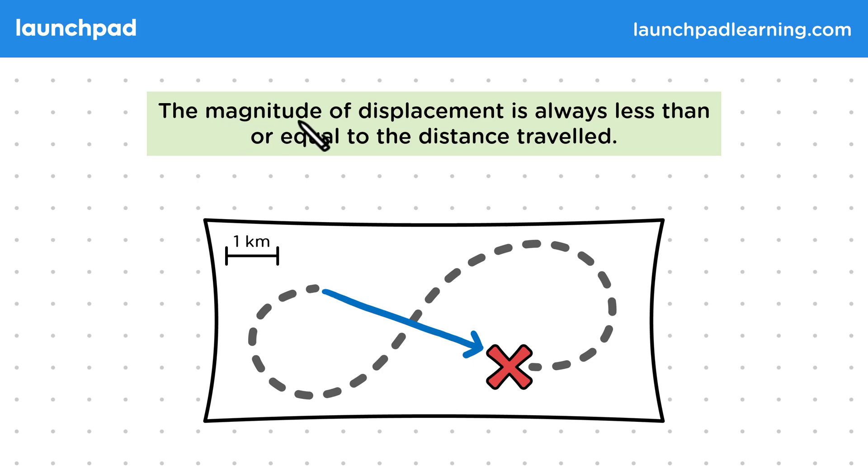Well the magnitude of displacement is always less than or equal to the distance travelled. And this is because the distance describes the full journey, whereas the displacement only describes the start and the end points.